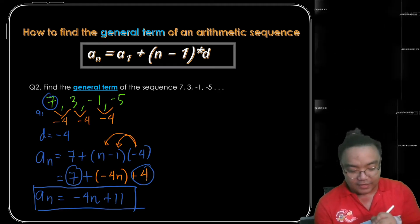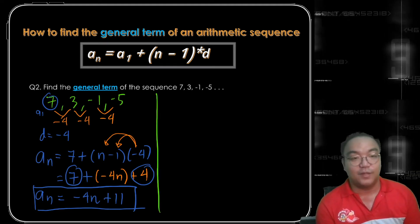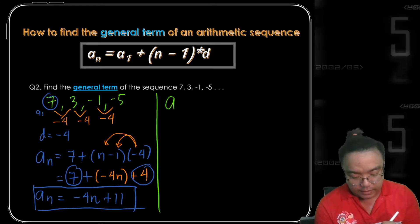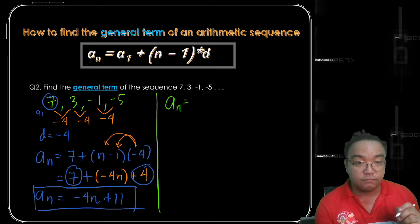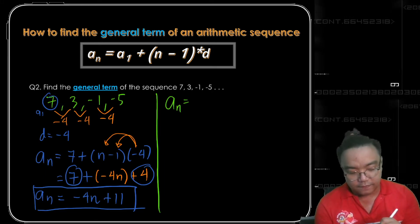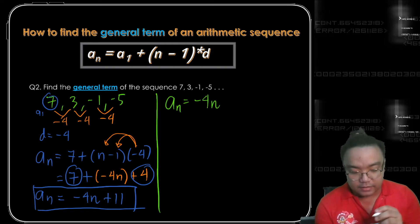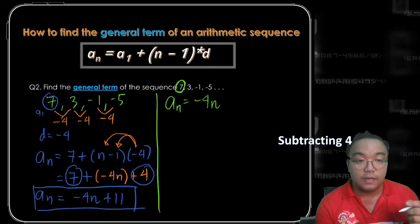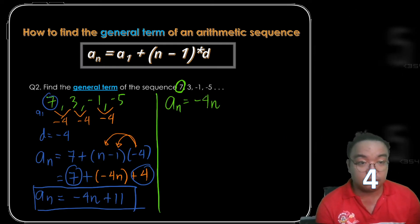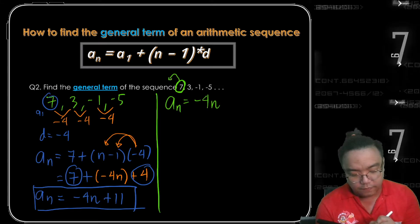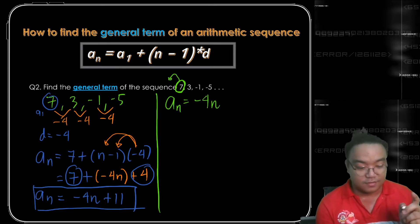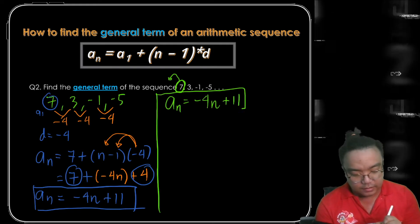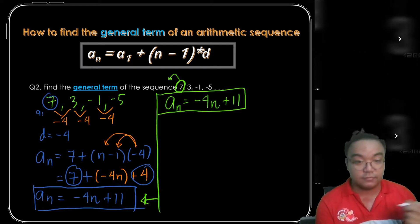Now let's apply the shortcut method. To find the general term, write a sub n equals the common difference of negative 4 times n. Then analyze the pattern: if 7 is our first term and we subtract 4 each time, what is the number before 7? To get that, you add 7 and 4 to get 11. That gives you the same general term: negative 4n plus 11.